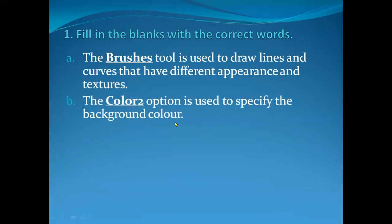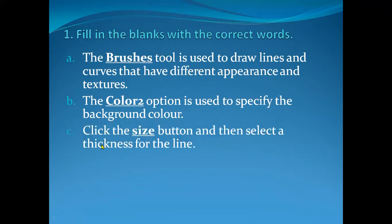Number B: The Color 2 option is used to specify the background color. Color 1 is used to fill the object, and Color 2 — it is written '2' here — Color 2 option is used to set your background. Number C: Click the Size button and then select the thickness of the line.